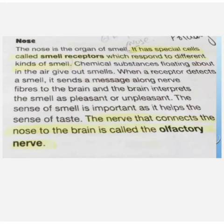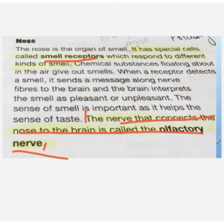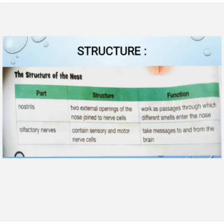The nose is the organ of smell. It has special cells called smell receptors which respond to different kinds of smell. The olfactory nerve connects the nose to the brain. The sensory cells detect the smell and send a signal along the olfactory nerve to the brain, which then interprets whether it is pleasant or unpleasant.